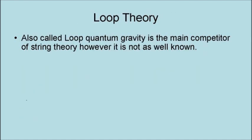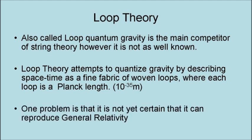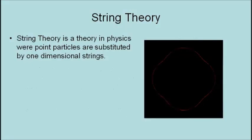Loop theory, also called loop quantum gravity, is the main competitor to string theory. However, it is not as well known. Loop theory attempts to quantize gravity by describing space-time as a fabric of woven loops, where each loop is a Planck length, that is, 10 to the minus 35 meters. One problem is that it is not yet certain that loop theory can reproduce general relativity.